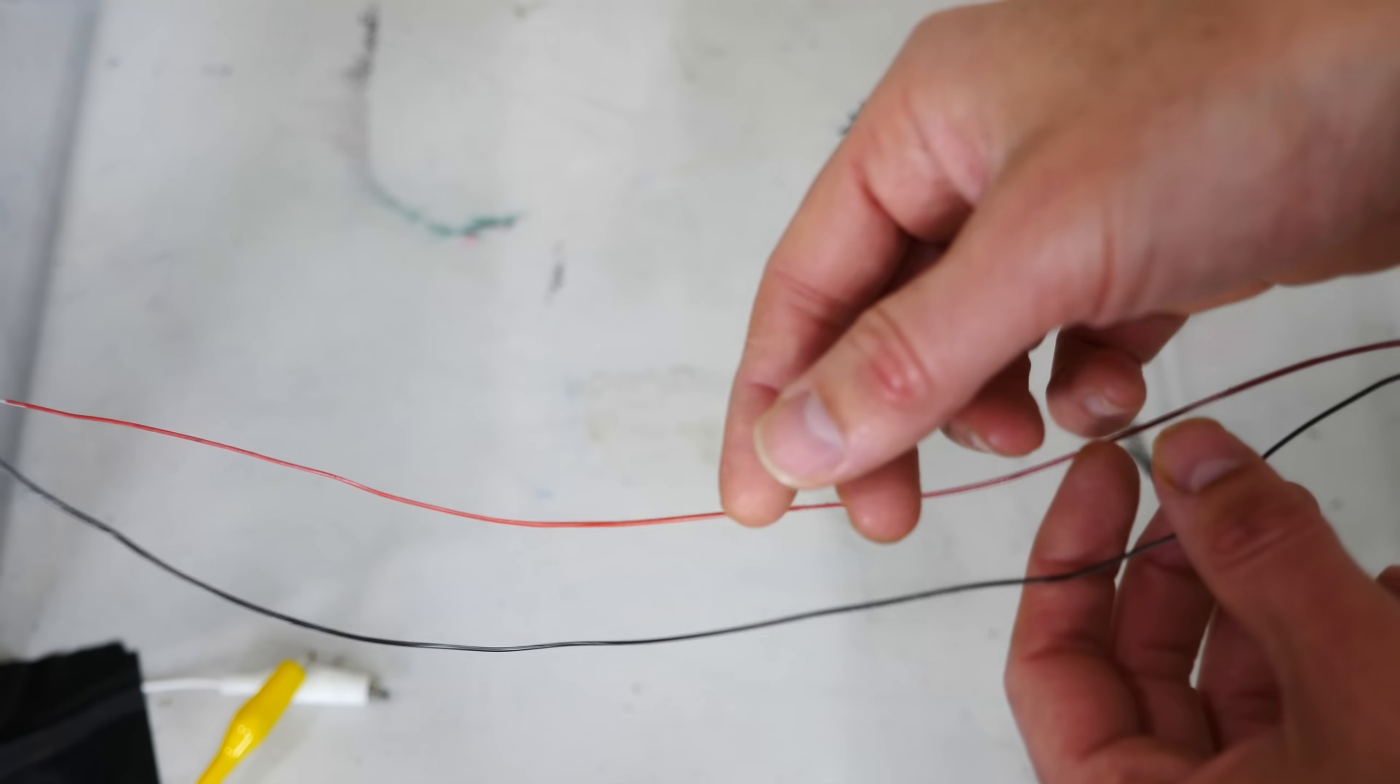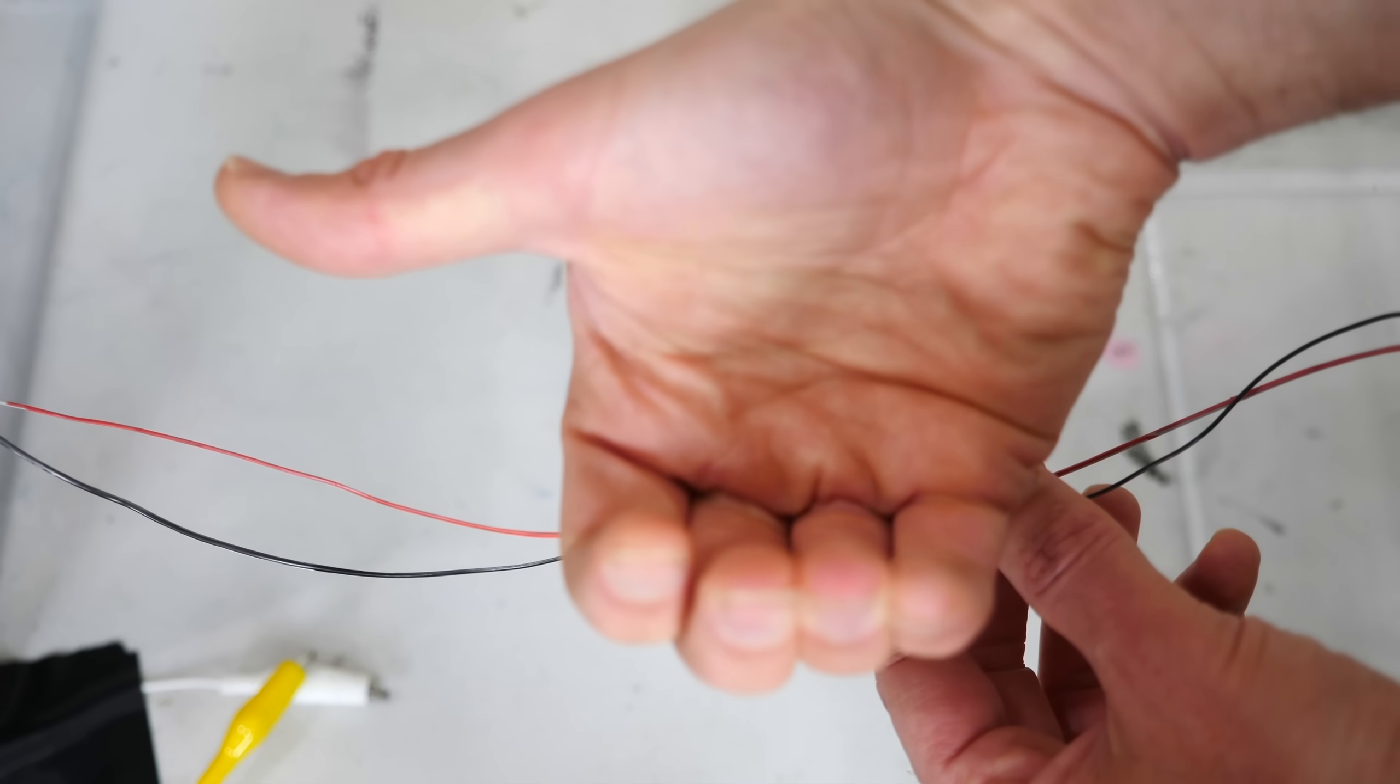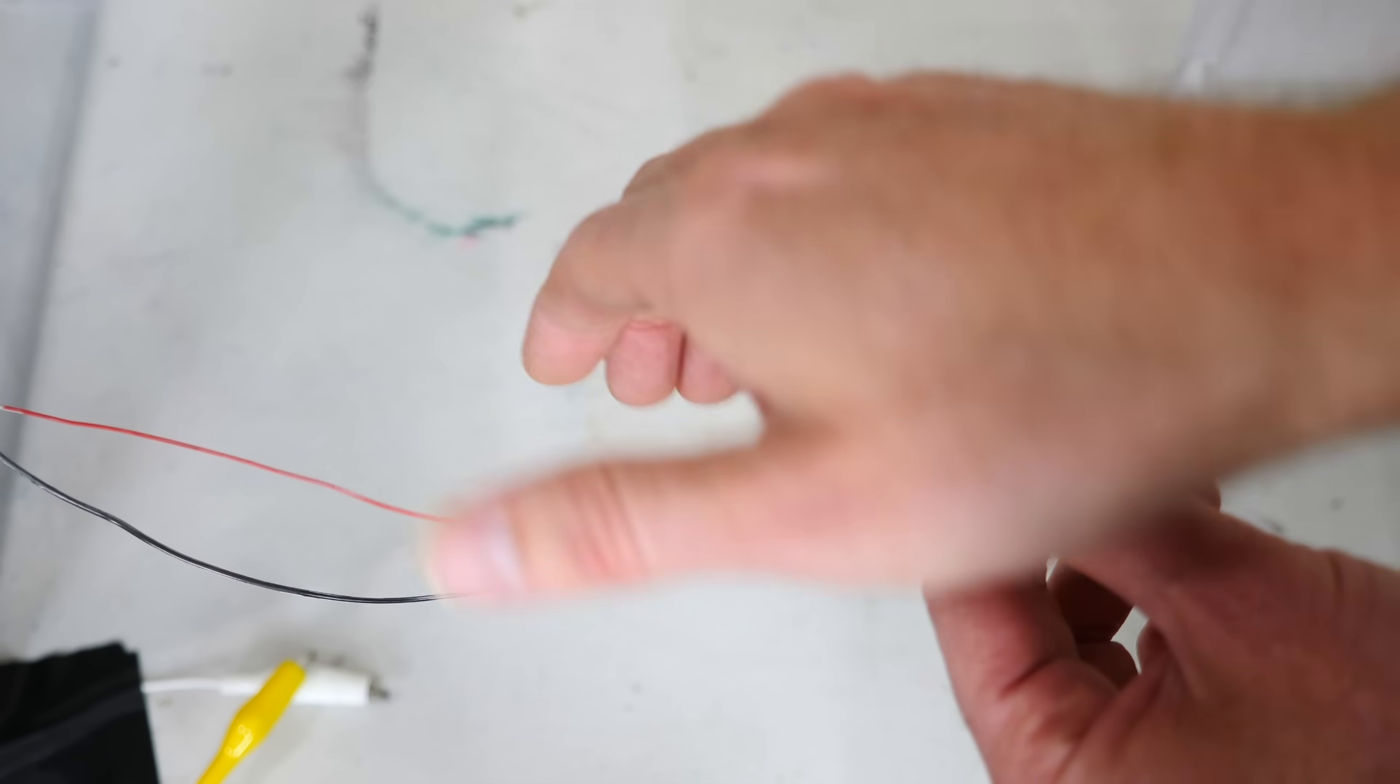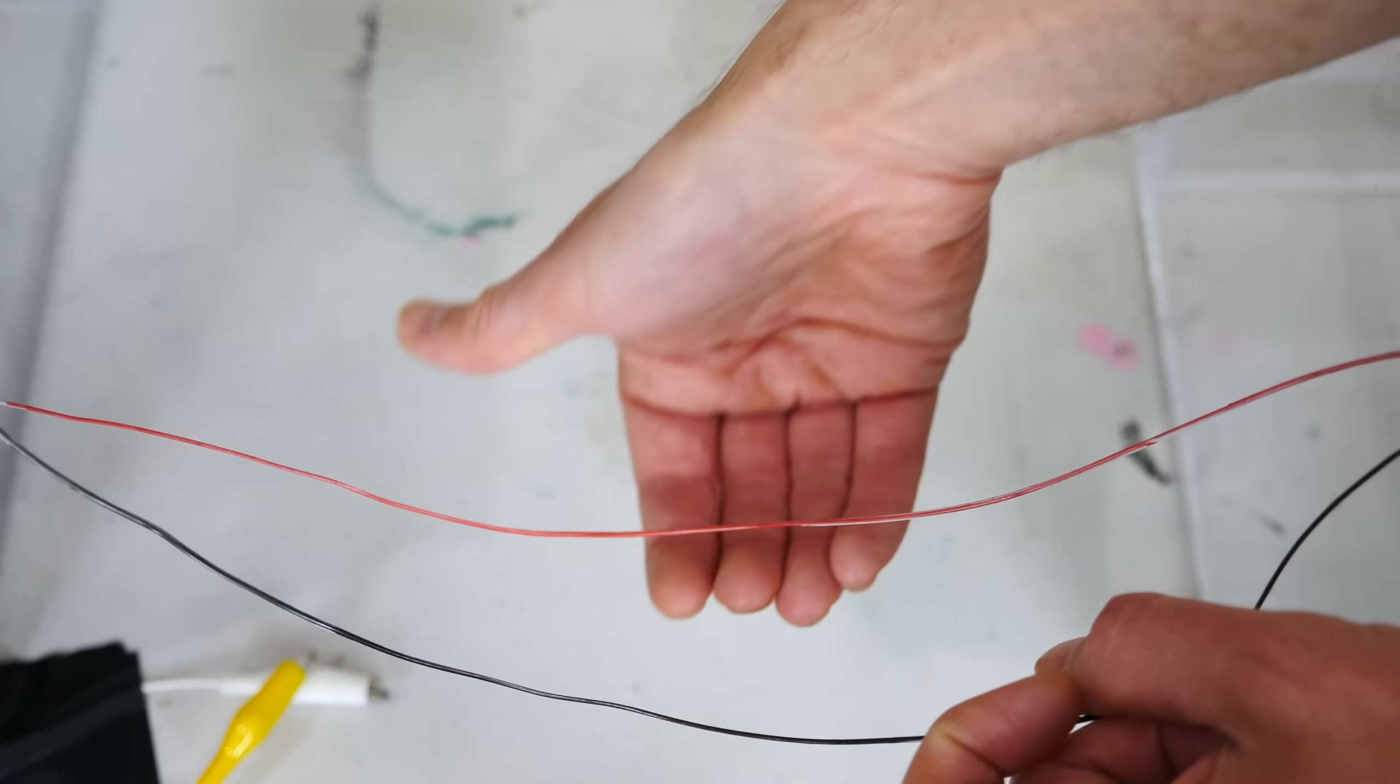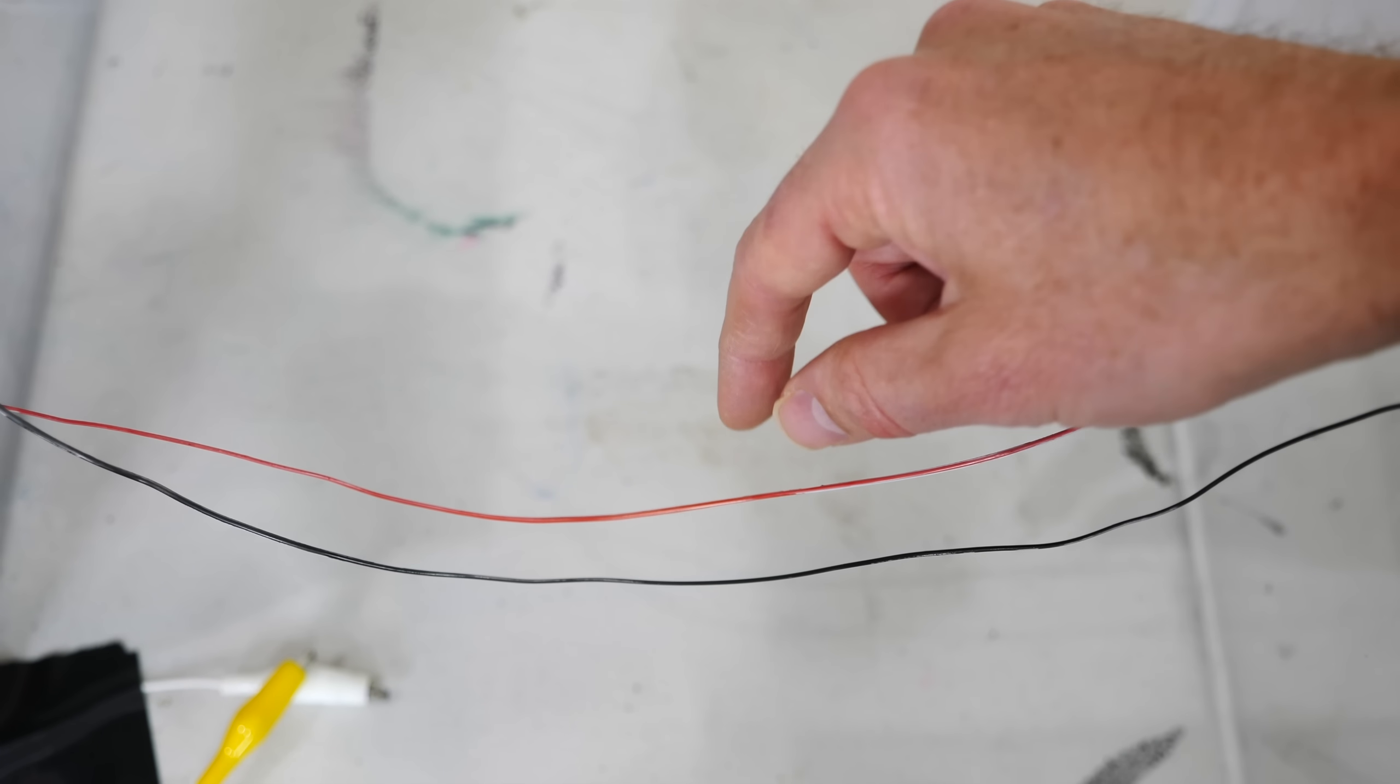So what's happening here is as the current moves through these wires it's creating a magnetic field. And the way you can tell which way the magnetic field is going is if you point in the direction of the current, your fingers will point in the direction of the magnetic field. So it's going to curve around this wire in this direction. And in this wire the current is going the opposite direction. So you're going to have the magnetic field pointing the opposite direction. So because you have these two magnetic fields pointing in the opposite direction, that means that they're actually going to repel each other.